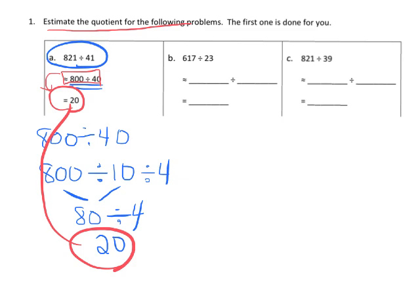So 617 divided by 23. There's a couple of ways we could do this. One way might be to say, well, let's do 600 divided by 20. There's our estimation. And I'm going to break this up into two steps. I'm going to say, okay, that's 600 divided by 10 divided by 2.